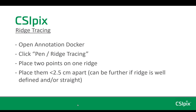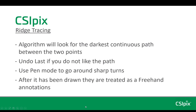Then you place two points on one ridge. Place them less than an inch apart, though usually it can be further if the ridge is well defined and or straight. The algorithm will look for the darkest continuous path between the two points and then fill it in.